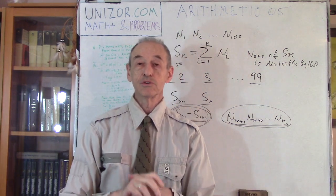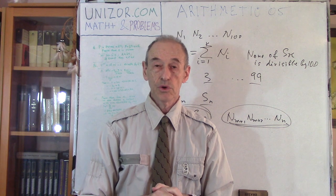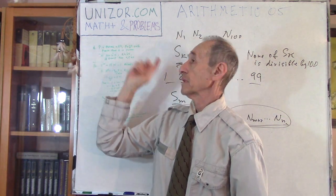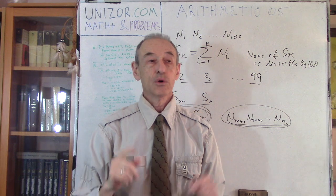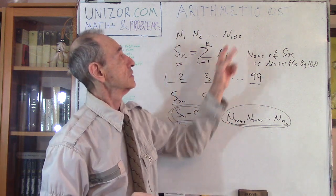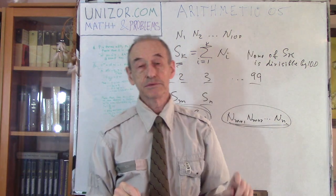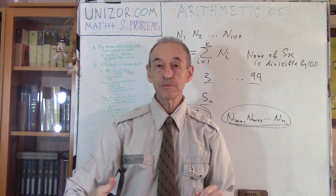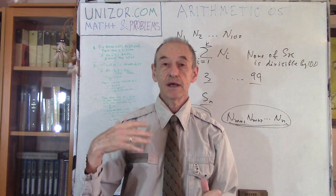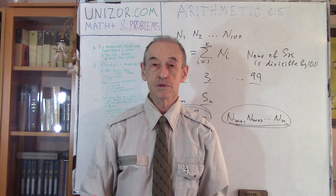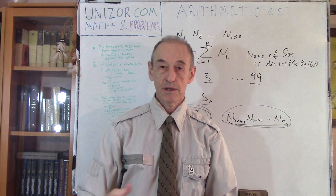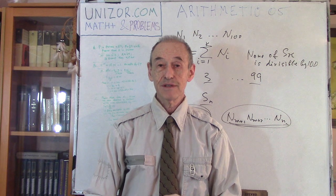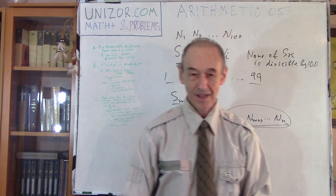I suggest you go to unizor.com, to the course Math Plus and Problems, go to the arithmetic part — arithmetic 0-5. Read the problems, read the hints, and try to recreate all the solutions yourself. That would be very, very helpful for you. Okay, that's it for today. Thank you very much, and good luck.